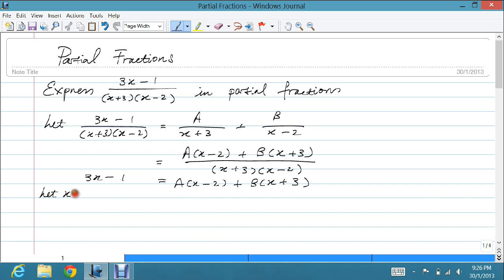I let x equal 2. The left hand side will be 6 - 1 = 5. On the right hand side, 2 - 2 = 0, so the first term disappears, and 2 + 3 = 5, so you get 5B. Therefore, 5 = 5B, so B = 1.